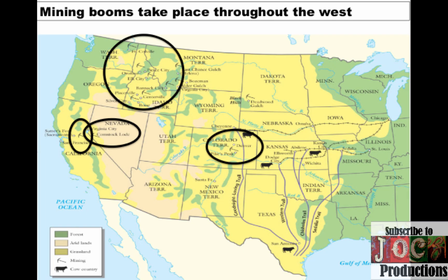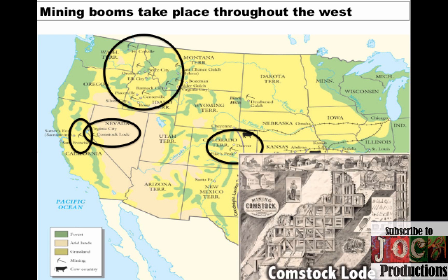Another key part of the economic development of the West is the mining booms throughout the region. We already talked about the 1848 California Gold Rush, which brought San Francisco's population up. Similarly, the Comstock Lode in Nevada led to the growth of cities like Virginia City. Whether it be Colorado or the future territory of Idaho, mining booms took place throughout this period, bringing people not only from the eastern United States but from other nations such as China.